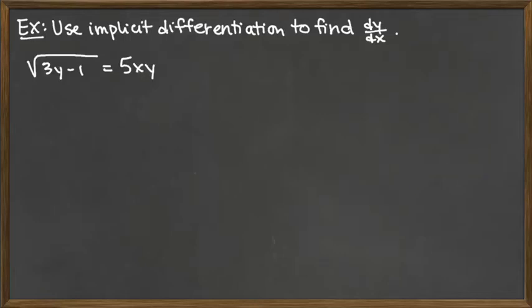For this example, we will be using implicit differentiation to find the derivative dy/dx of this implicit equation. We do not solve for y first, we just take d/dx of both sides as our first step of implicit differentiation. So here we do have the square root, which algebraically we first need to see as the 1/2 power.